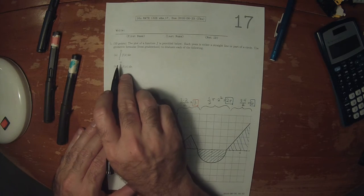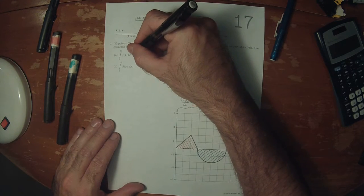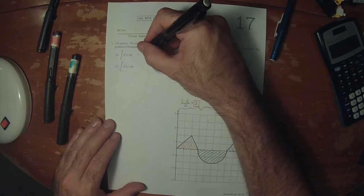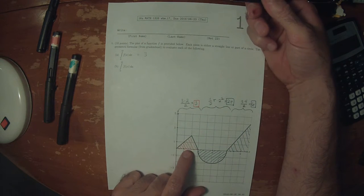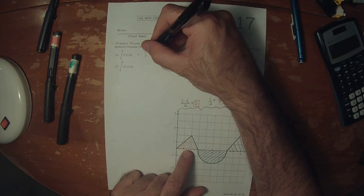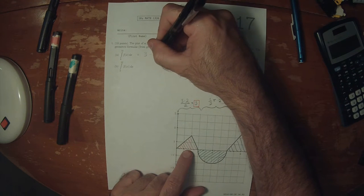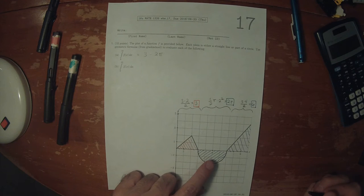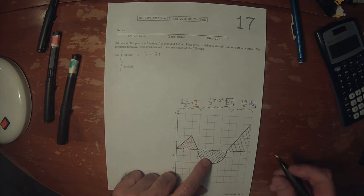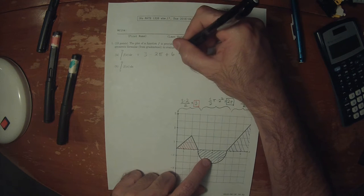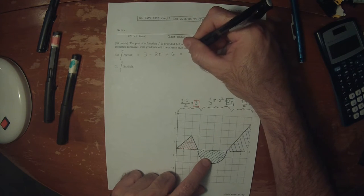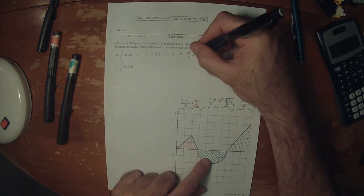The integral from zero to ten sees this as three, because that one is positive, and then minus two pi, because that one is negative, and then plus six. So that would be nine minus two pi.